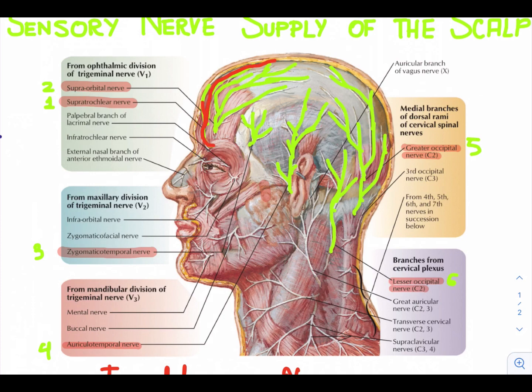The second nerve is the supraorbital nerve. Let's trace the supraorbital nerve. This is the supraorbital nerve. It's also a branch of the ophthalmic division of the trigeminal nerve. It winds around the superior orbital margin and ascends over the forehead. It supplies the scalp as far backward as the vertex.